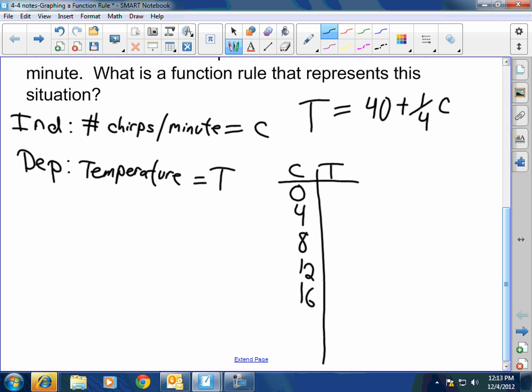Because when it's zero chirps, it's 40 degrees outside. Four chirps, it's 41 degrees. Eight chirps, it's 42 degrees. Twelve chirps, it's 43 degrees. Sixteen chirps, it's 44 degrees, et cetera. And then from here, if you needed to, you could graph those points. Sir, this is, yes, this would not be continuous. Good job. Because you can't have half a chirp. Very good question, son. Thank you. May I continue, gentlemen?